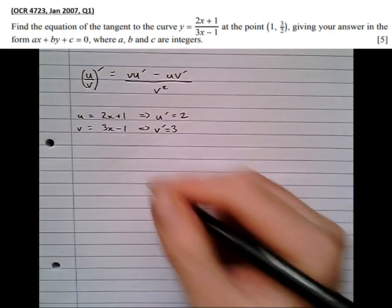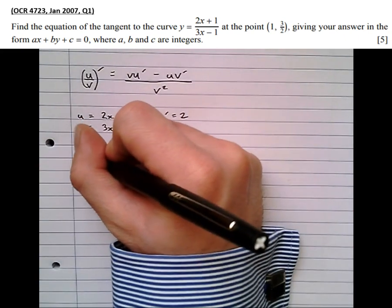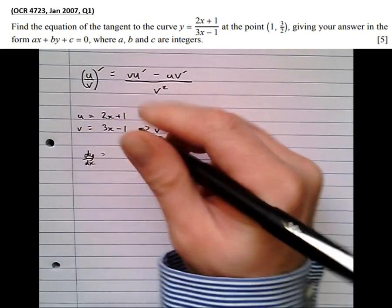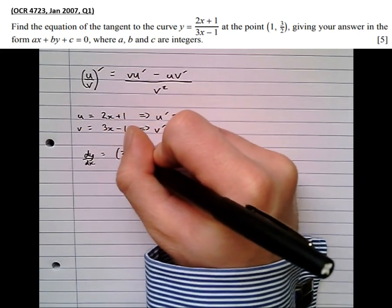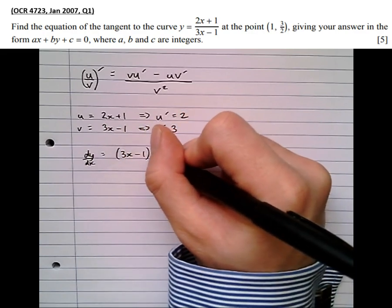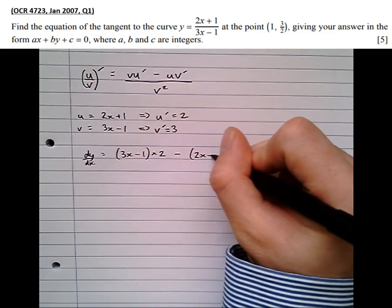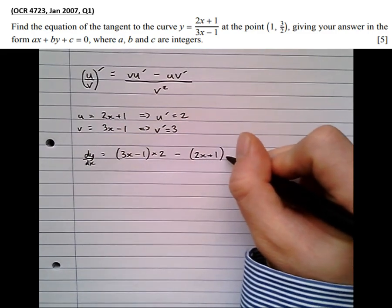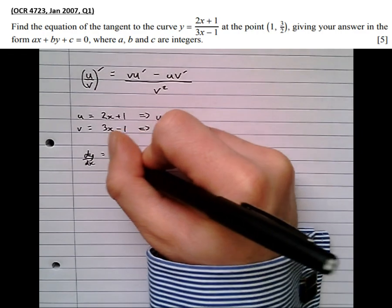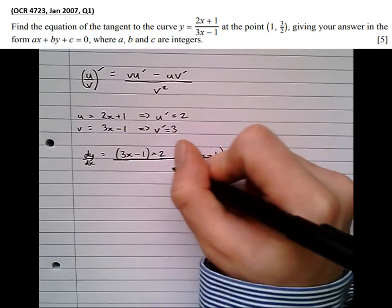So now plugging that into the quotient rule formula, I get dy by dx equals v u dash minus u v dash all over v squared.